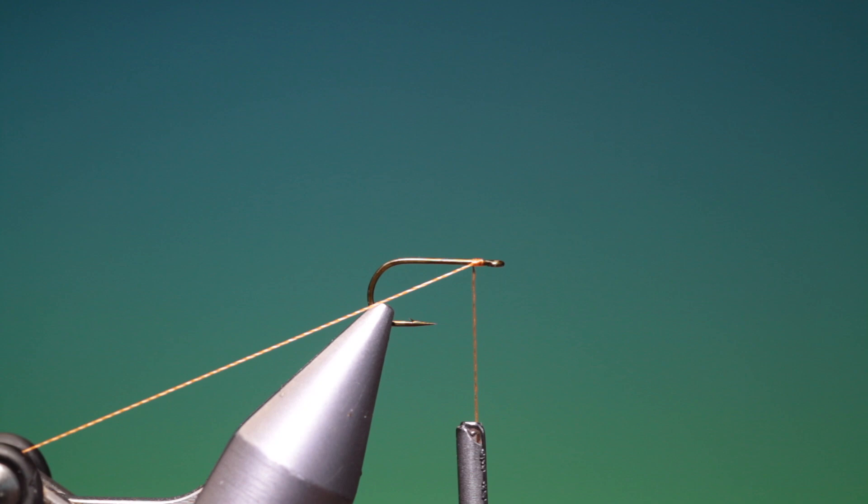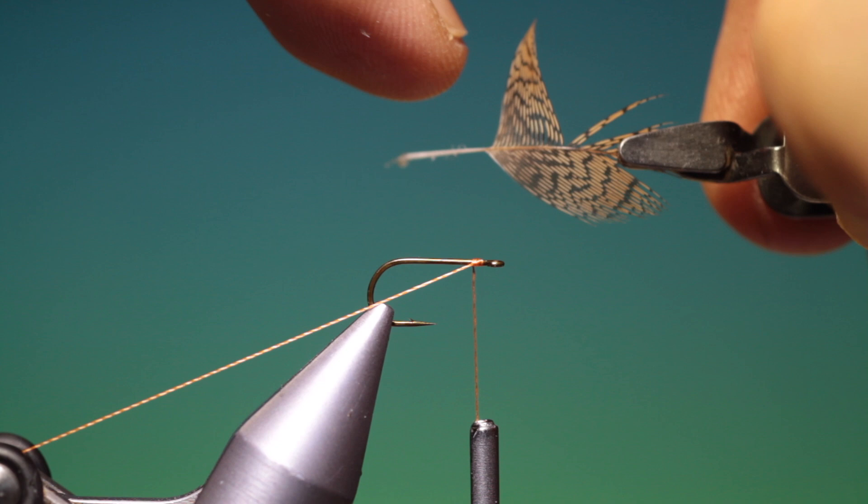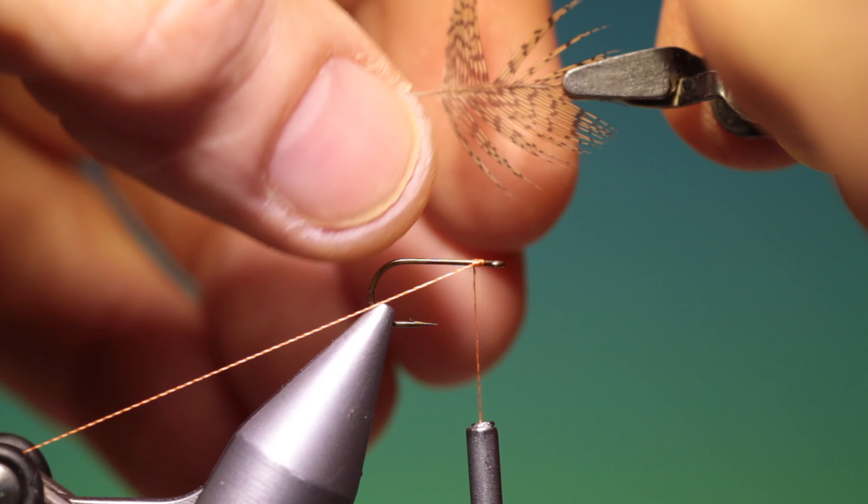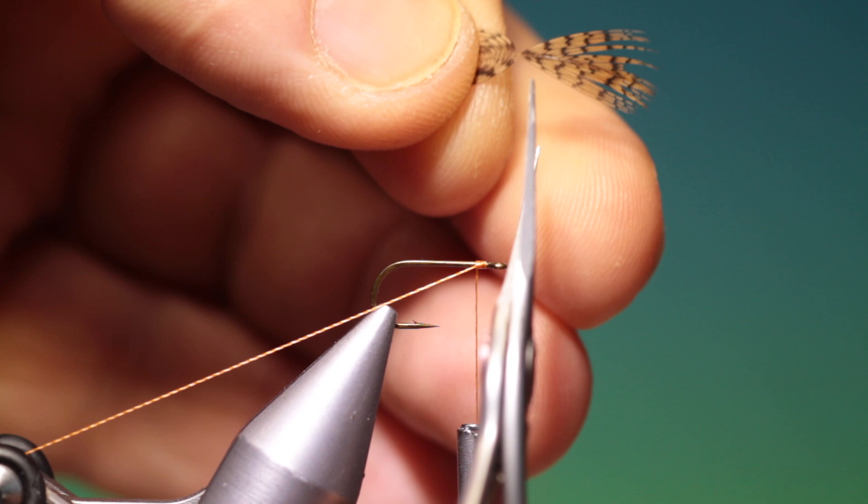Then we turn the hackle around and we put the hackle plier on the tip like that. Now for this size 14 what I want is about 5mm of hackle that way. So we pull those both up like that. Next I'll just trim that down like so.